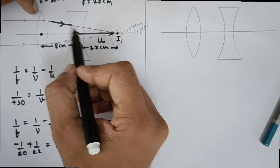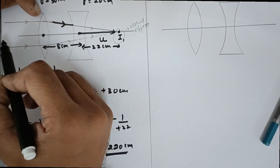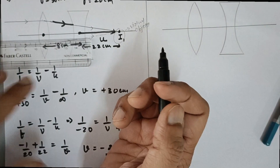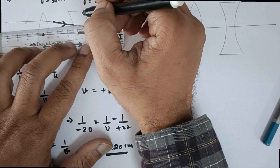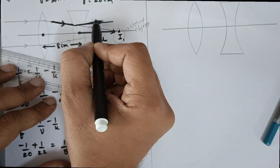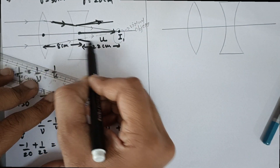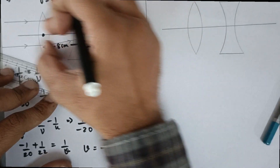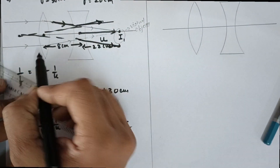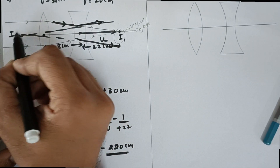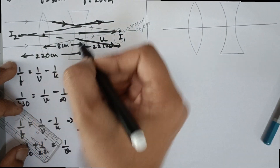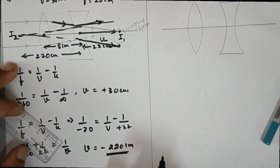This image distance of −220 cm means the image is formed in the opposite direction — on the left side of the concave lens. The rays are diverging, and when extended backwards, the final image I2 is formed 220 cm from the optical center of the concave lens.